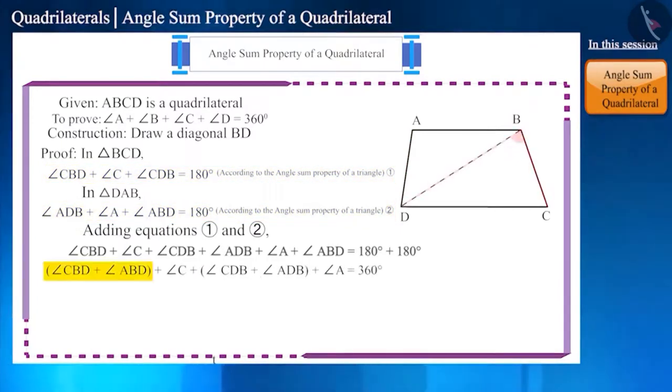Now, when we add angle CBD and angle ABD, we get angle B. Similarly, on adding angle CDB and angle ADB, we get angle D.